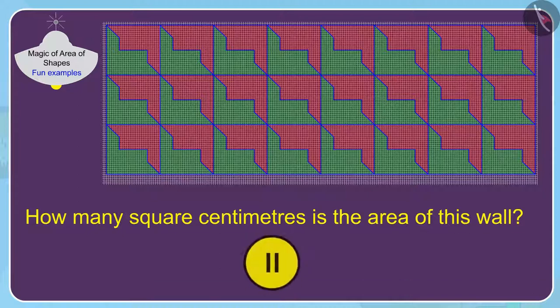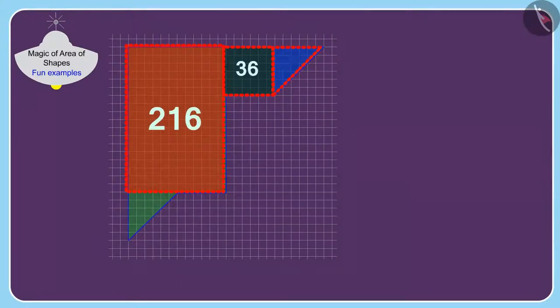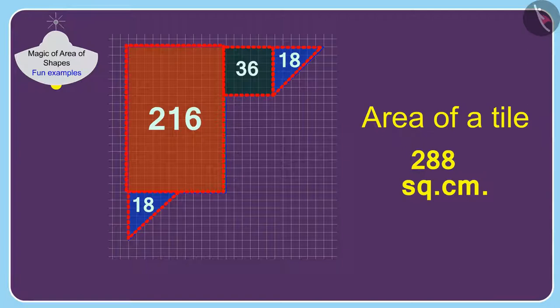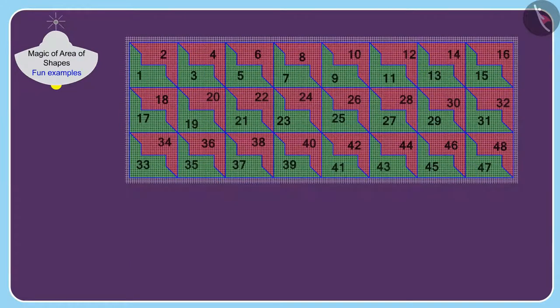If you want, you can stop the video and find the answer. First, we will find the area of a tile. In this way, the area of a tile is 288 square centimeters.